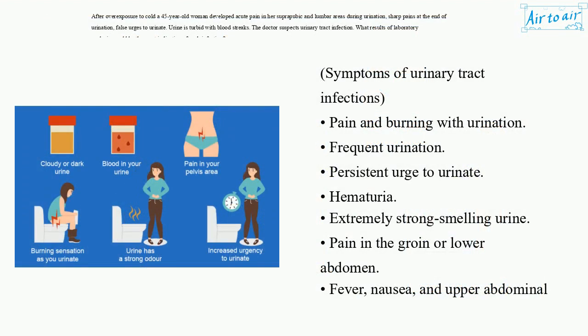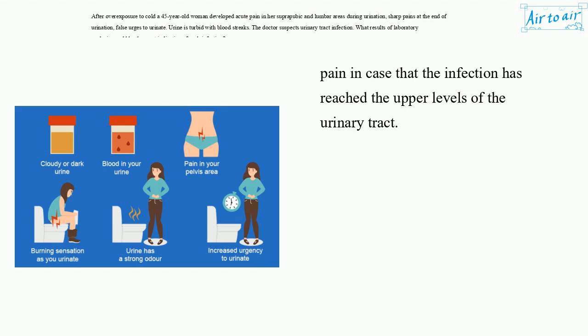Symptoms of urinary tract infections: pain and burning with urination, frequent urination, persistent urge to urinate, hematuria, extremely strong smelling urine, pain in the groin or lower abdomen, fever, nausea, and upper abdominal pain in case the infection has reached the upper levels of the urinary tract.